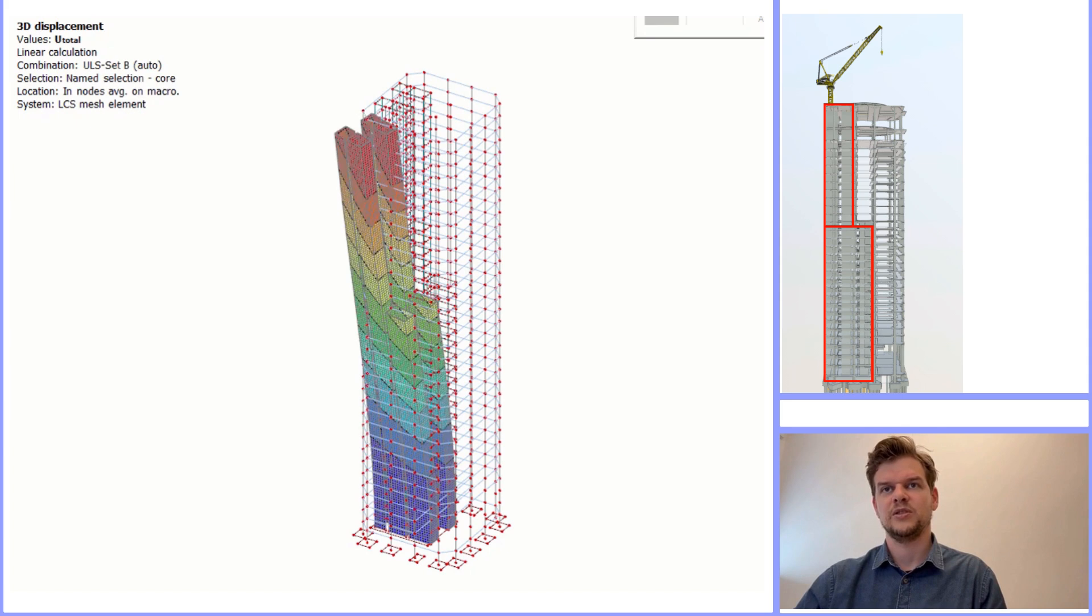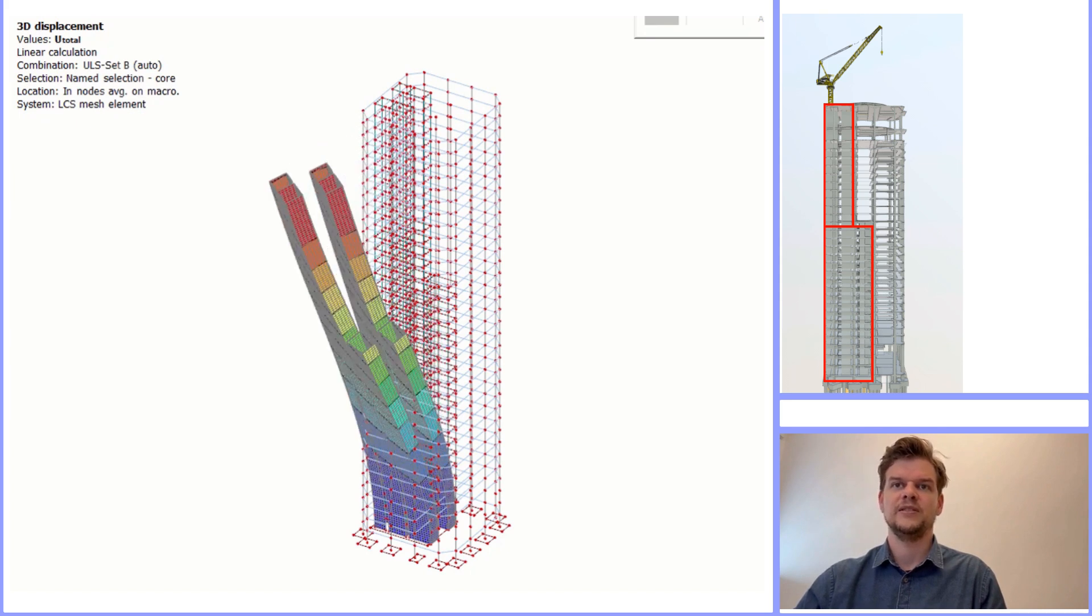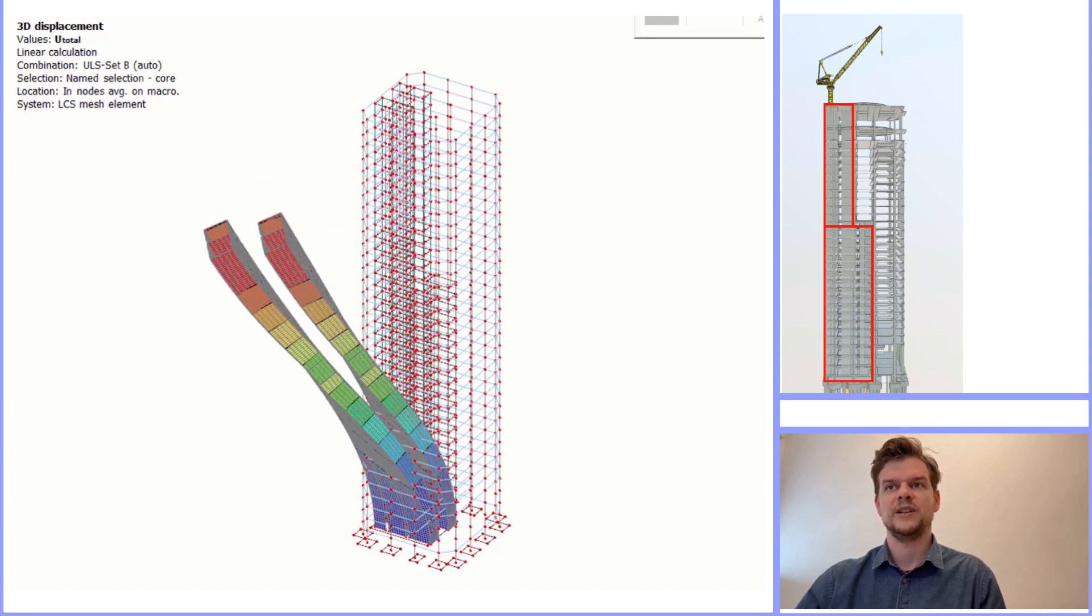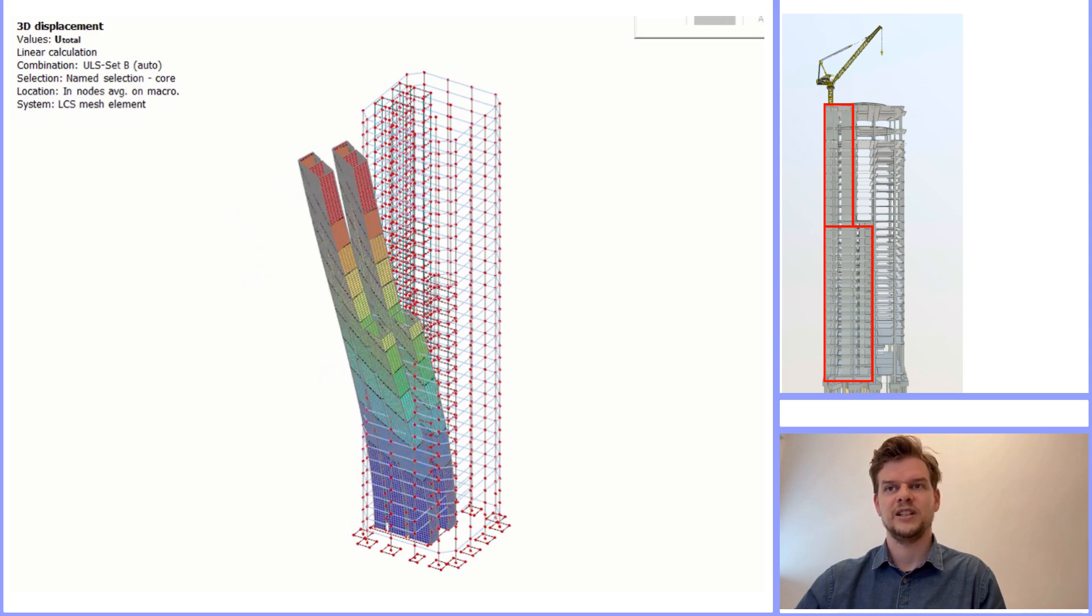On the right side of the screen, you can see the core highlighted in red. That same core is shown twisting in the animation, the part that was meant to keep the entire building standing.